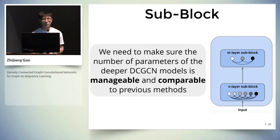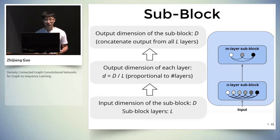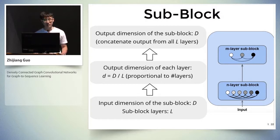As our model has many more layers, we need to ensure the number of parameters is manageable and comparable to previous methods. For parameter efficiency, we have the following design: assume the input dimension of the sub-block is D and the number of layers is L. The output dimension of each layer is proportional to D divided by L. We then concatenate output from all L layers to form the final representation, whose dimension is also D — the same as the input.